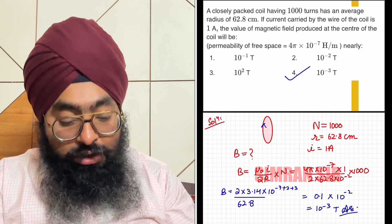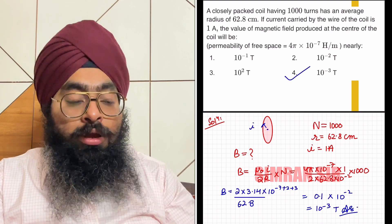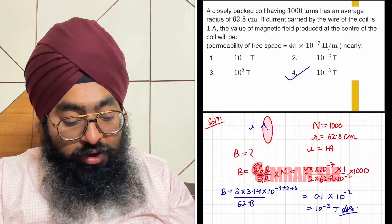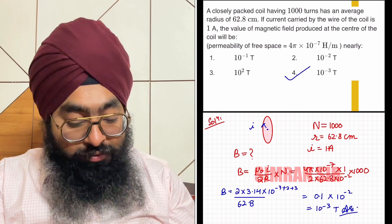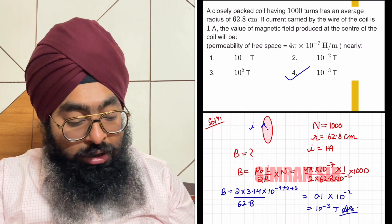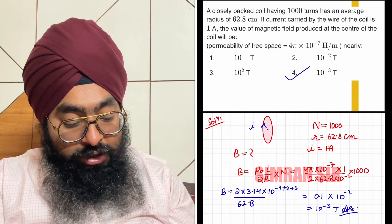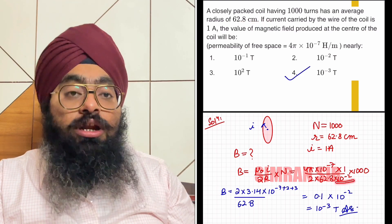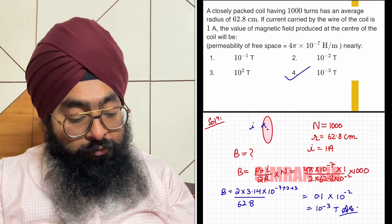Now we substitute the values here. For μ₀, the value will be 4π×10⁻⁷. Current is 1 ampere. Number of turns is 1000. Radius is 62.8 centimeters as given, so we'll convert to meters by multiplying by 10⁻².